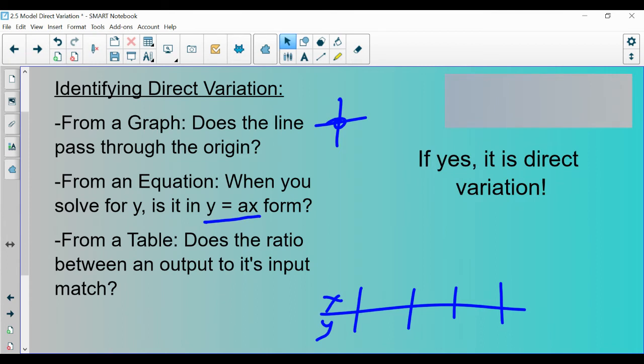And whatever the number that you get out in that scenario would be its constant of variation. So if you answer yes to any of these questions, it is direct variation.